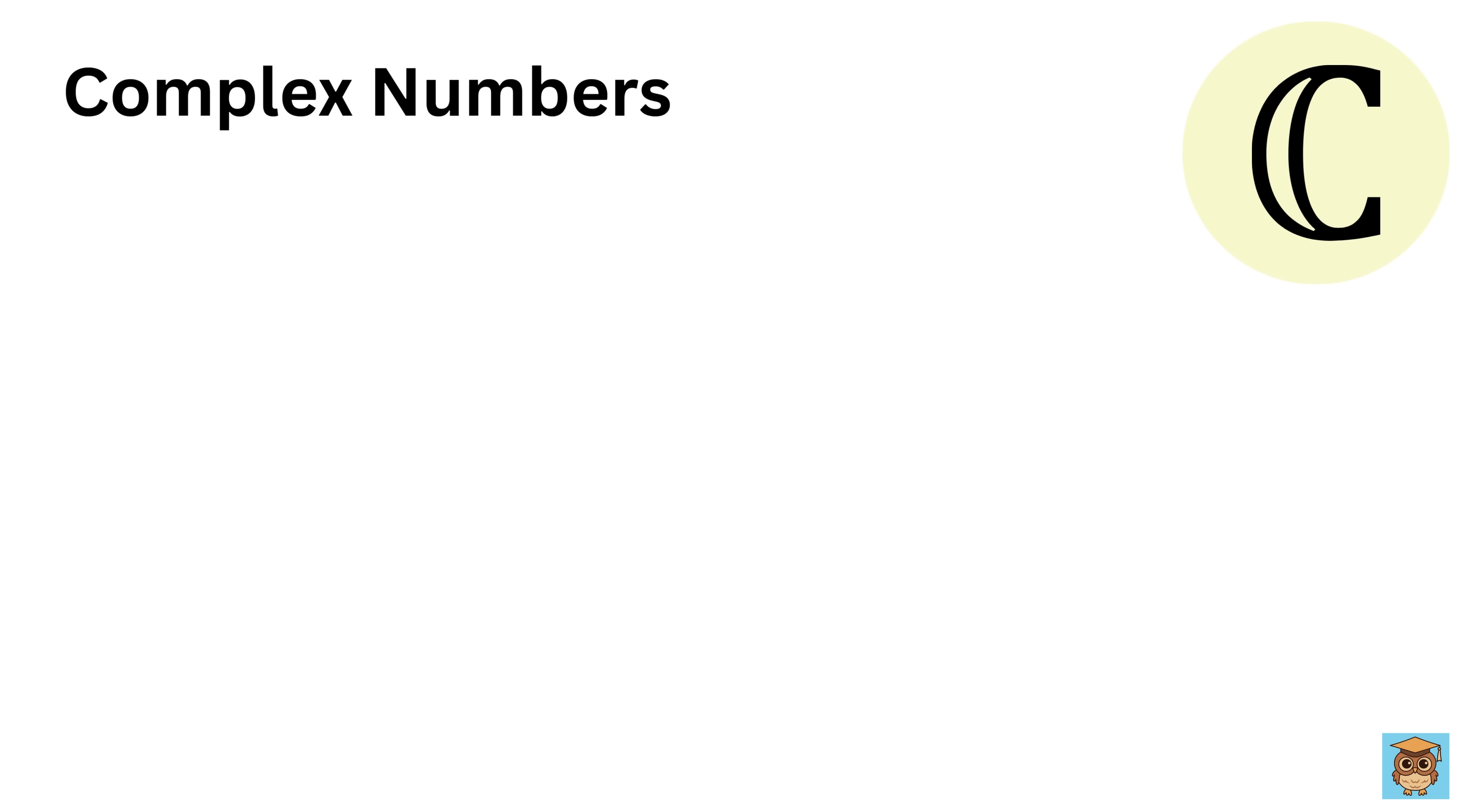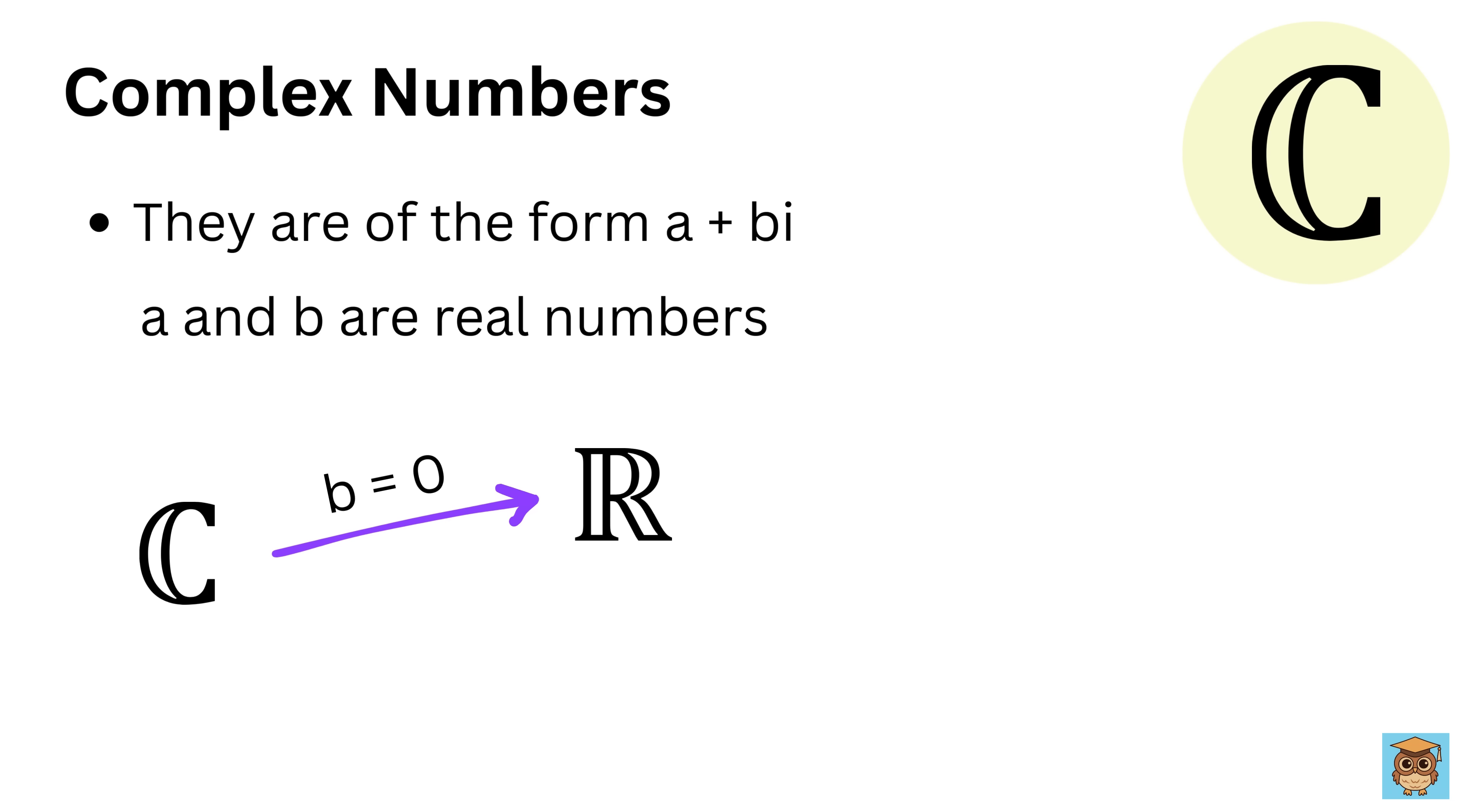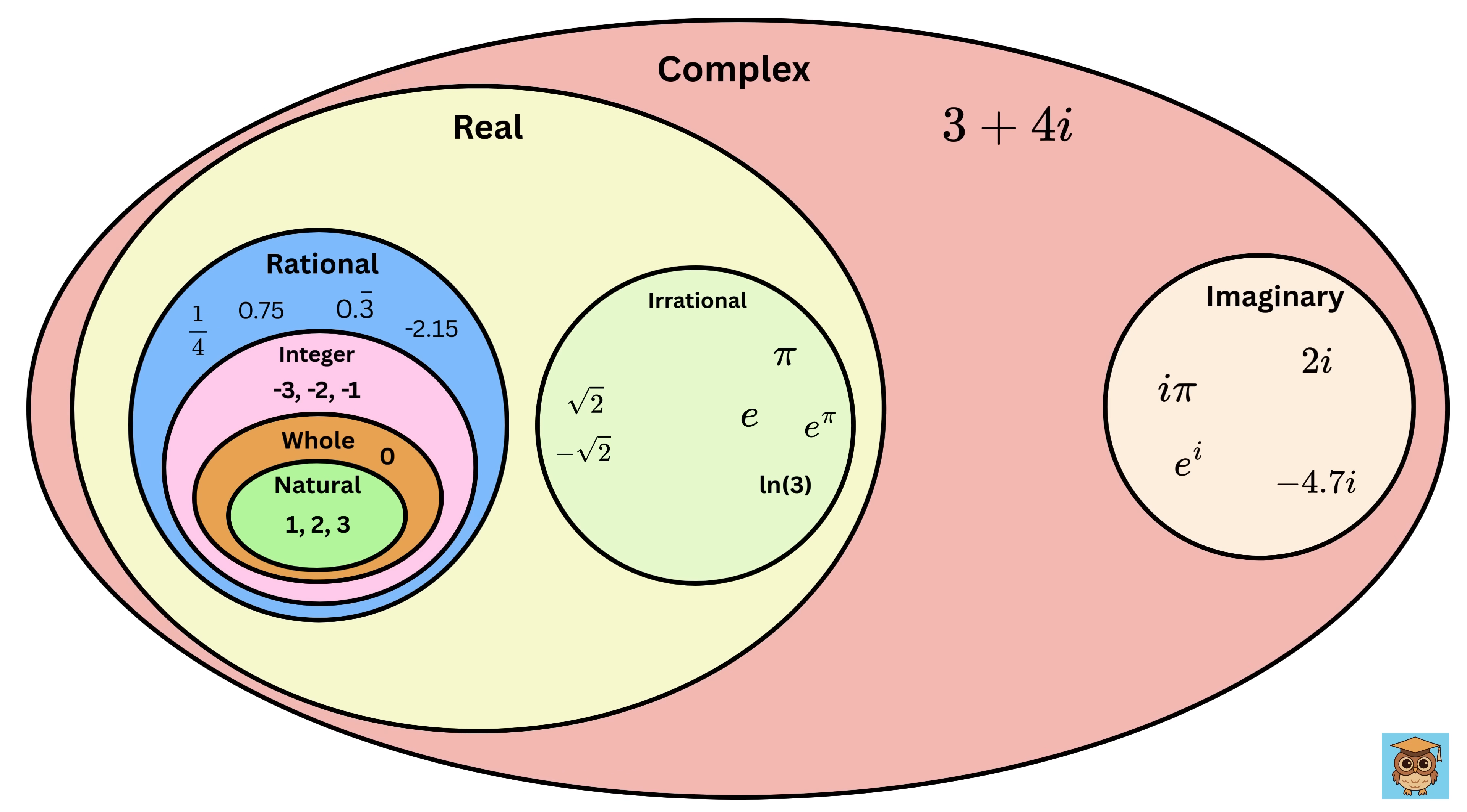Complex numbers are numbers in the form a plus b times i, where a and b are real numbers. Complex numbers become real numbers when b is zero, and become imaginary numbers when a is zero. For example, 3 plus 4 times i and -2 minus square root of 2 times i are complex numbers. These can be visualized on the complex plane and are fundamental in many areas of science and engineering.